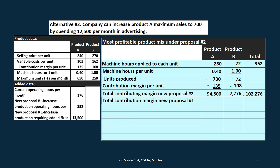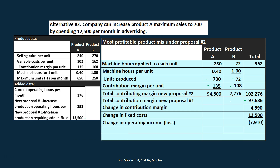Comparing to proposal one's contribution margin of $97,686, the increase is only $4,590. The $13,500 fixed cost from proposal one is irrelevant here since we've already accepted that proposal. But this proposal requires $12,500 in advertising to gain only $4,590 in additional contribution margin — so this is a no-go. The marketing department would need to either increase sales beyond 700 units or reduce the advertising cost to below $4,590 to make it worthwhile.